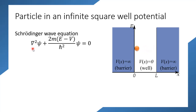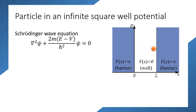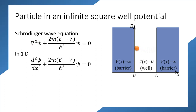We have seen this in our previous video. Here our potential well is just in the x direction, so we can replace the del-squared operator by d²/dx². In one dimension, we can rewrite this equation as: d²ψ/dx² + (2m/ℏ²)(E − V)ψ = 0.